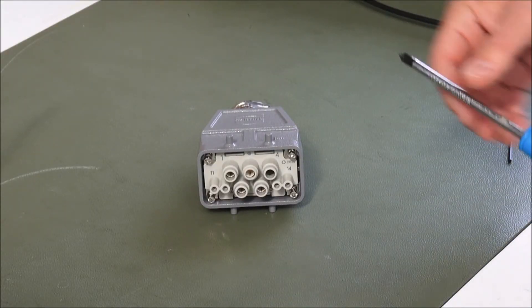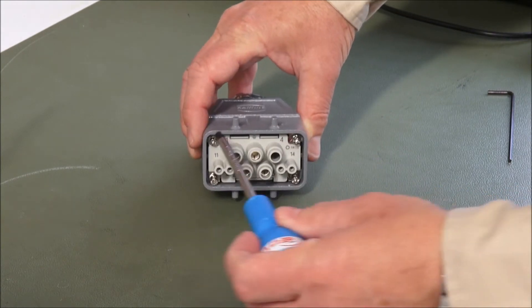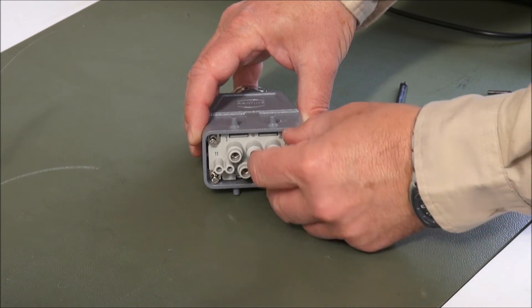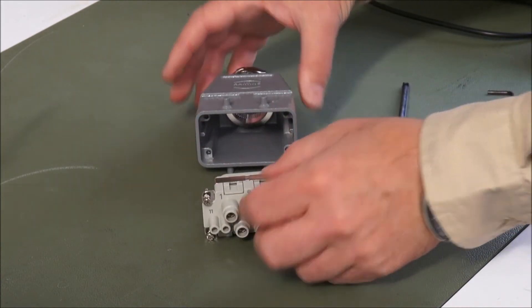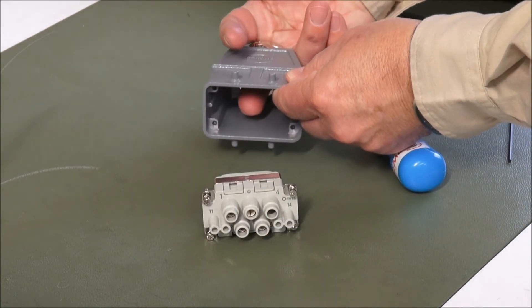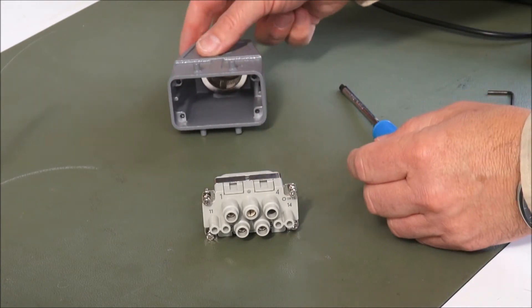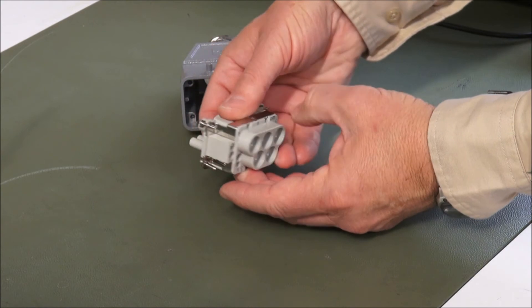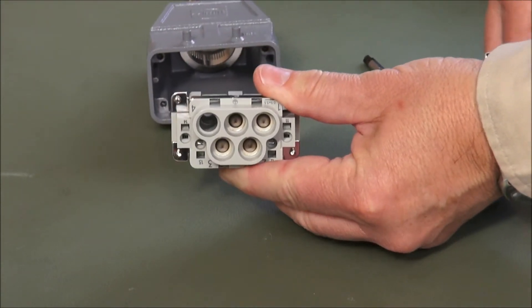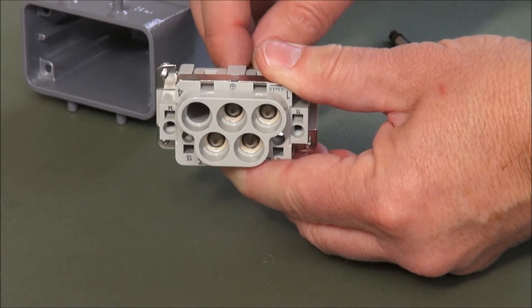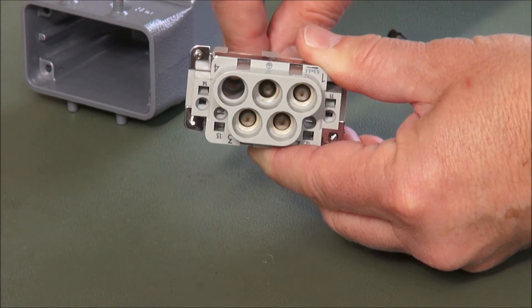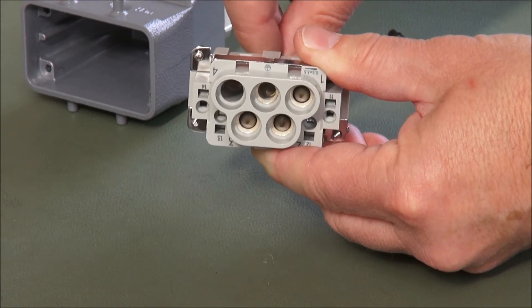But it's worth just having a look at the Harting connector here. The front interface is simply removed in this case by removing the screws here and it pulls away. Obviously you'd feed the cable through the gland at the back of the housing there. And the critical thing on the back of the Harting connector where the cables go in are these conical clamps.